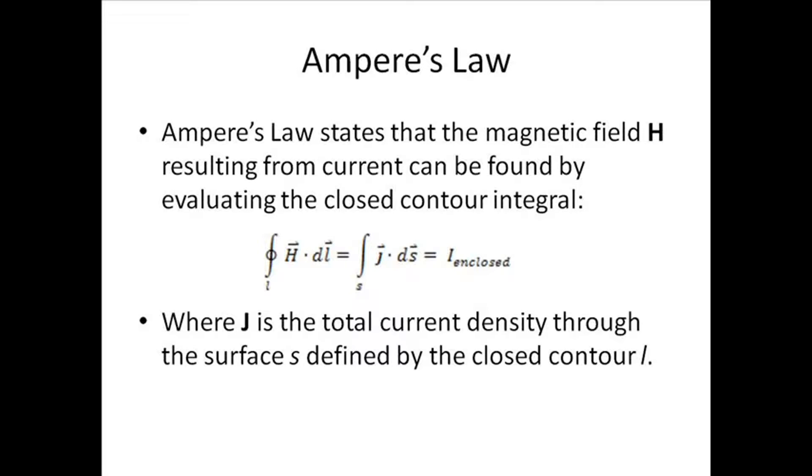Ampere's law states that the magnetic field H, resulting from the current, can be found by evaluating the closed contour integral. H dot dl is equal to J dot ds, which is equal to the current enclosed in the contour, where J is the total current density through the surface S defined by the closed contour L.